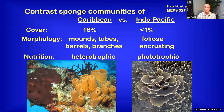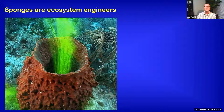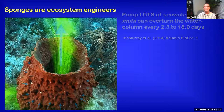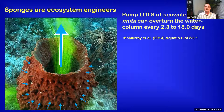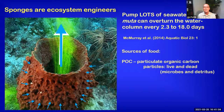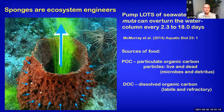Sponges are really ecosystem engineers — more so than many other organisms called ecosystem engineers — because they pump huge amounts of seawater. They can overturn the entire column of water above them every 2.3 to 18 days. In so doing, they affect the chemistry of the seawater as they feed on the particulate and dissolved material in it. What they're feeding on is particulate organic carbon — both living and dead particles, microbes and detritus — but they're also eating dissolved organic carbon, including things like sugars but also refractory DOC like the tannins that give coffee its brown color. Their capacity to eat dissolved organic carbon could be hugely important in the ecology of Caribbean reefs.